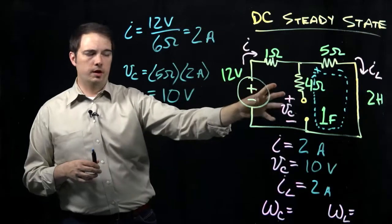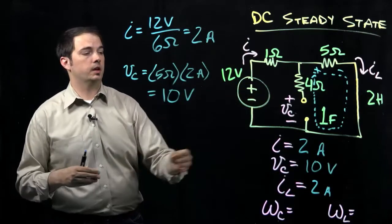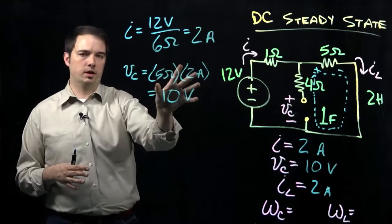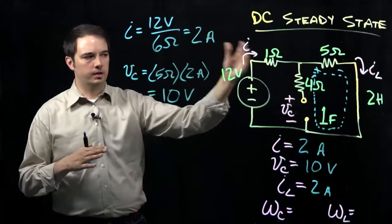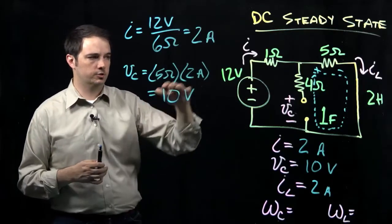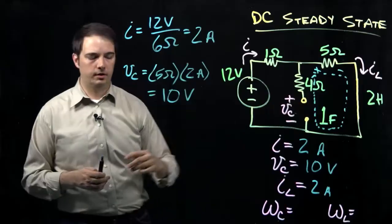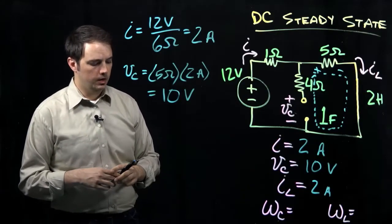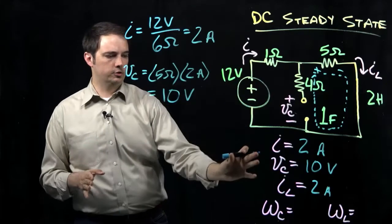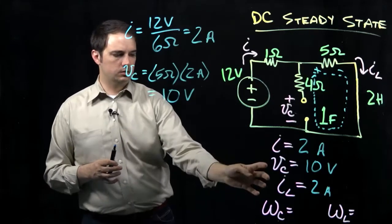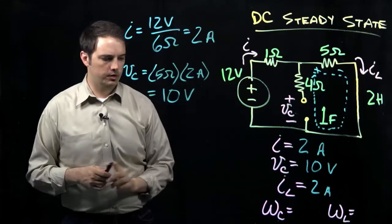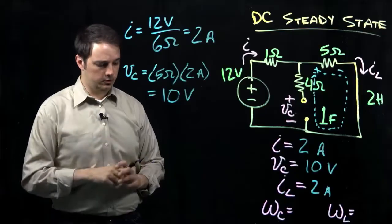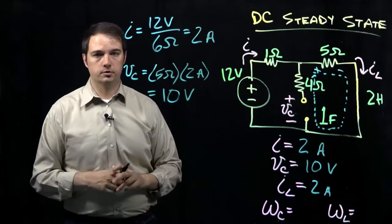And we'd always want to pay attention to how the polarity is indicated. So if this was opposite, if it was minus to plus, then this would actually need to be negative. We can illustrate that or prove that by just thinking about what the KVL equation would tell us around that part of the circuit. All right, so we found those primary currents and the voltages. Now, using the voltage across the capacitor and the current through the inductor, we can find the amount of energy stored in each of those elements.